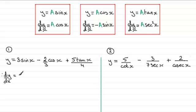For the first term, 3 sine x, the constant A is 3, so we get 3 cos x. For the second term, minus 2/3 cos x, the constant A is minus 2/3, so when we differentiate it we get minus 2/3 of sine x according to this result.